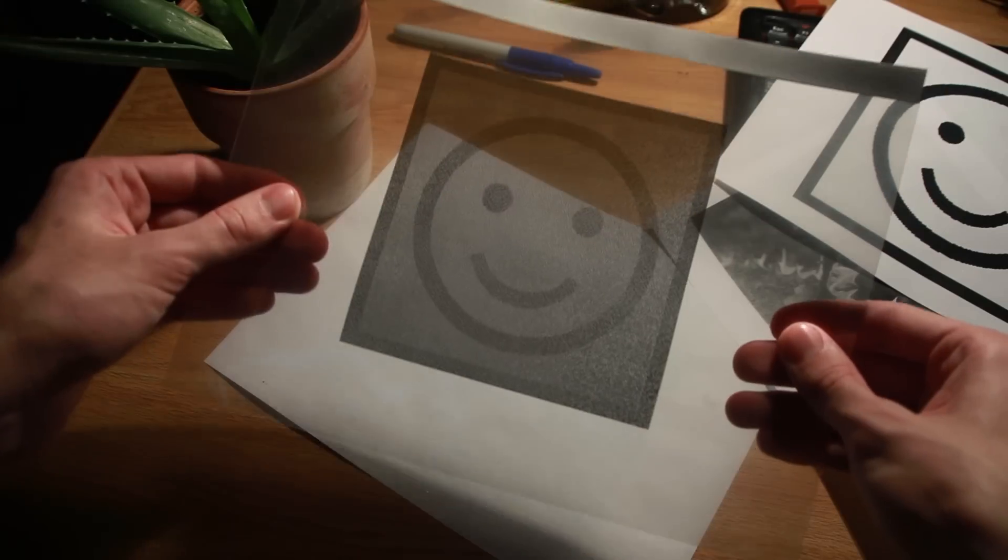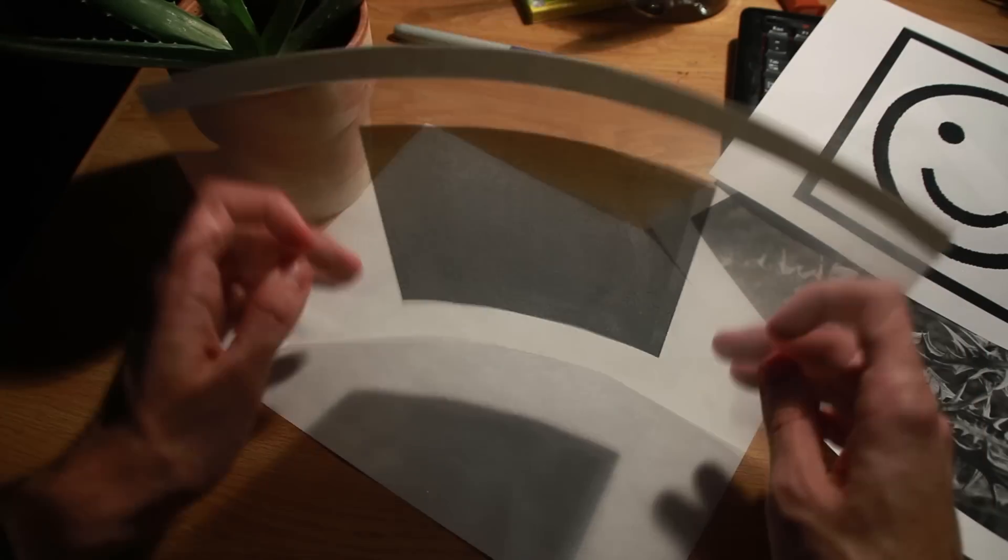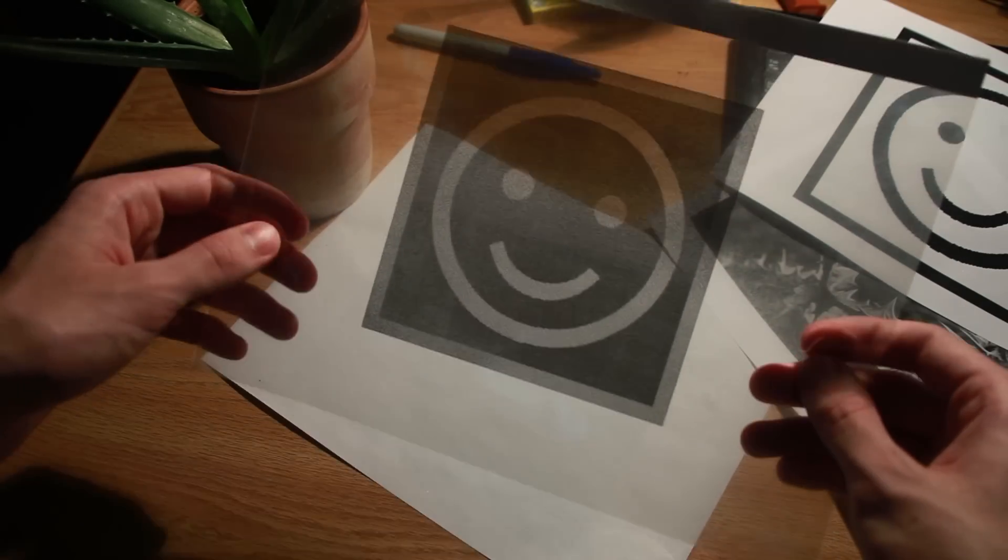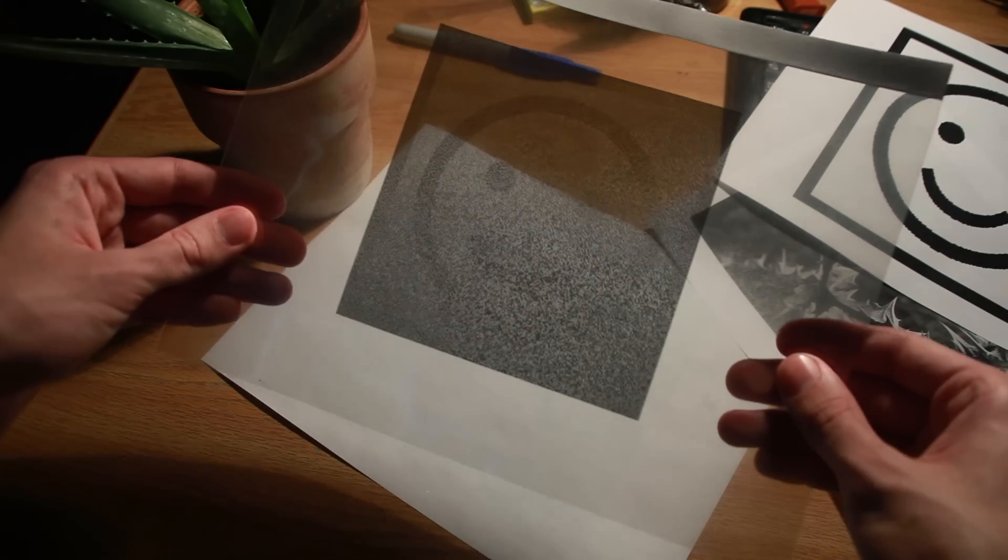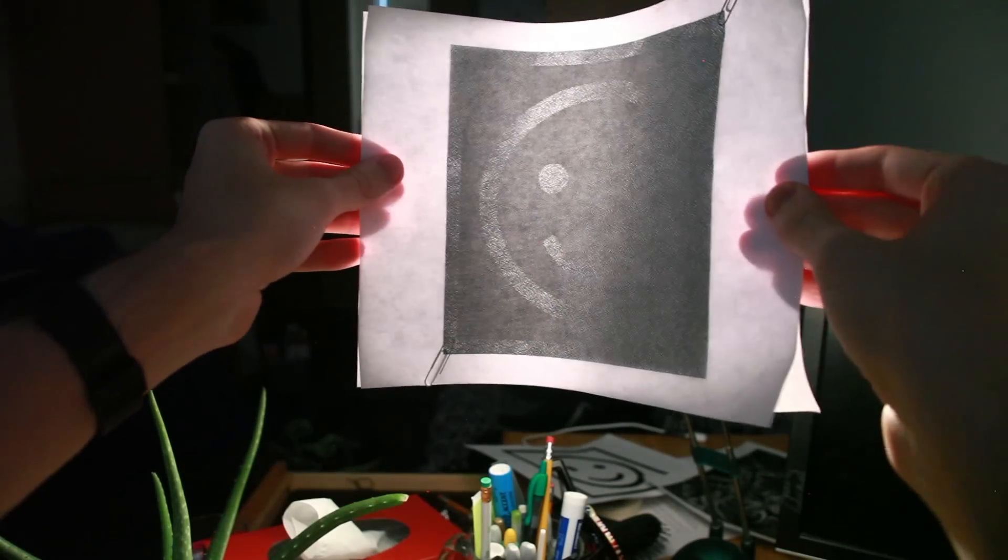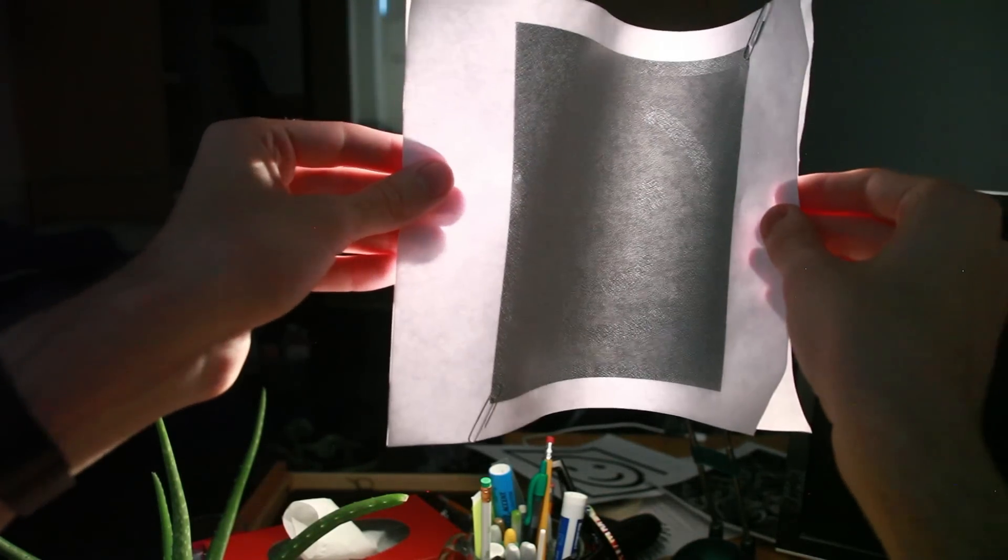Now this is great because the shares can be printed on transparencies. Once the shares are aligned, the secret image is revealed in person. It is also possible to print the shares on regular printer paper, but it is more difficult to reveal the secret image this way.